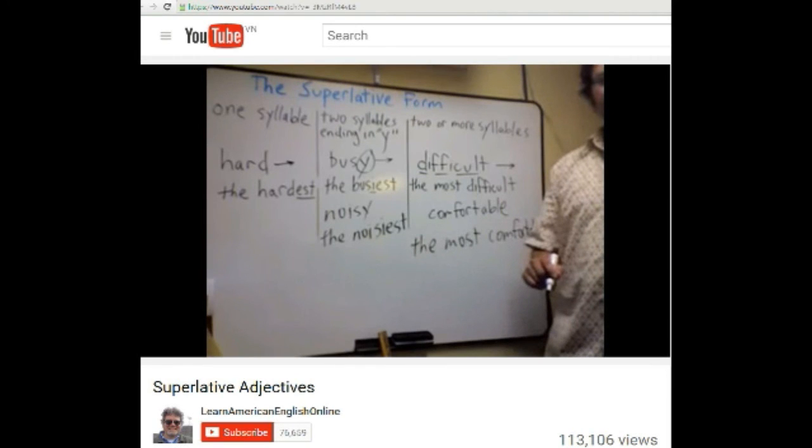Đối với những tính từ có hai âm tiết hoặc có nhiều hơn hai âm tiết thì khi đổi sang dạng so sánh nhất thì chúng ta phải thêm từ the most đằng trước tính từ đó.